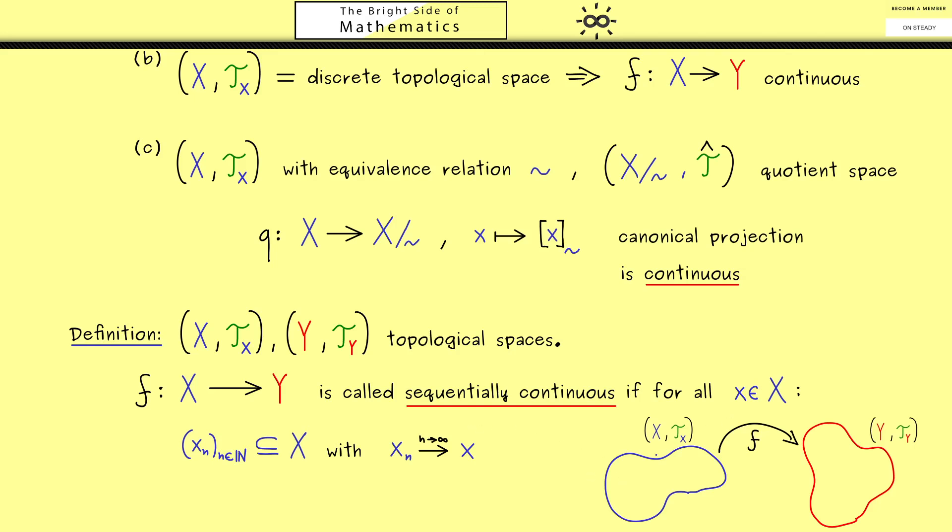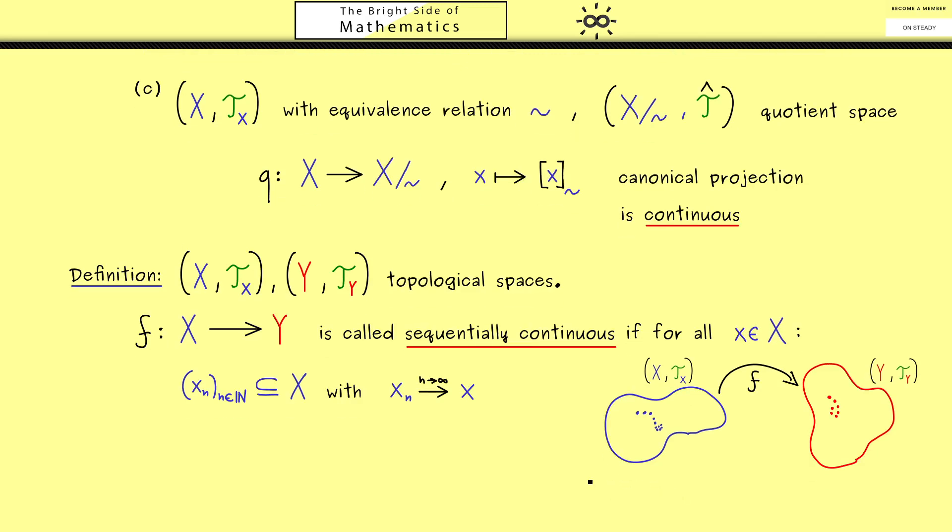Now if we take the visualization from above, the sequence x_n now lives here on the left hand side. And by using the map f we can map it to the right hand side. Okay, and there we know we want that the sequence on the right hand side is also convergent.